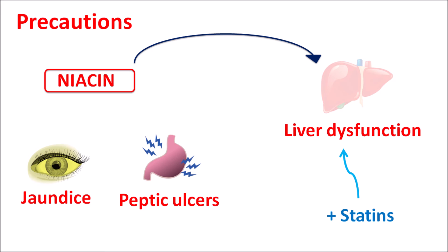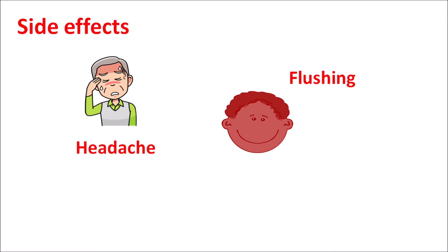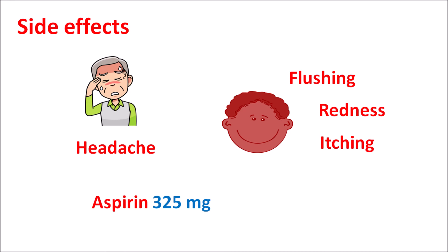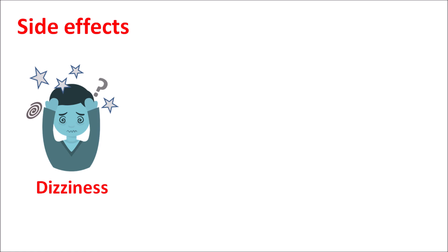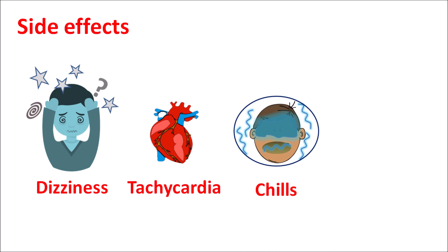An important side effect of niacin is headache. Since niacin acts as a vasodilator by increasing prostaglandin release, it can cause headache and flushing — resulting in redness of the face, itching, and pruritic conditions. To avoid flushing, extended-release formulations are used. Flushing can also be controlled by administering aspirin 325 mg 30 minutes before niacin, which reduces the prostaglandin-mediated flushing.